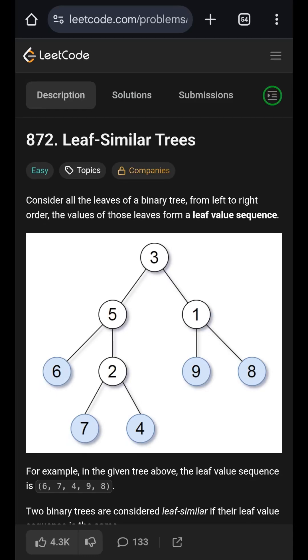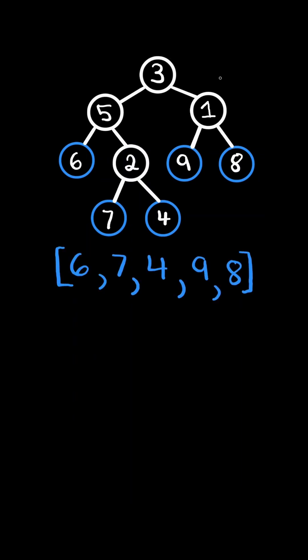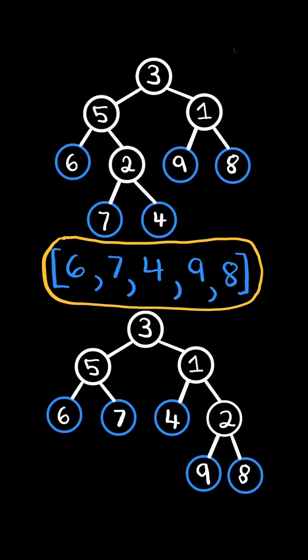Consider the binary tree and its leaves. From left to right, the leaves form a leaf value sequence. We are given two binary trees, and we return true if they have the same leaf value sequence from left to right. In this case, the leaf value sequence is the same for both trees, so we return true.